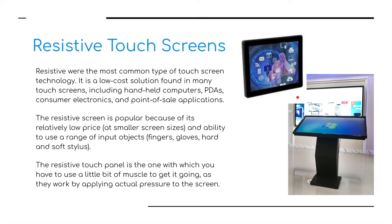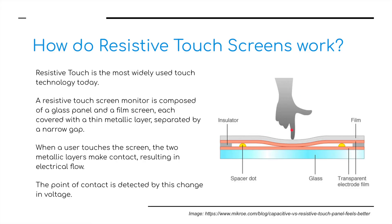The next type is resistive touch screens, which used to be the most common. It's a low-cost system used for handheld computers, personal devices, consumer electronics, and point-of-sale applications. The resistive screen is popular because it is relatively low price and able to use a range of input objects such as fingers, gloves, and hard or soft styluses. Resistive touch panels require some actual pressure applied to the screen to work.